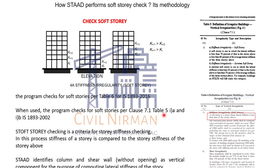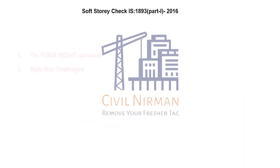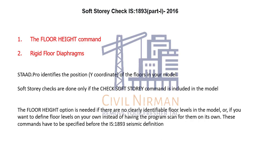Now let's understand the basic requirement when you go for a soft story check. In order to perform the soft story check there are two methods — you just require any one of them. These are the floor height command option and the rigid floor diaphragm option. STAAD.Pro identifies the position of Y coordinates of the floors in your model, and soft story checks are done only if the 'check soft story' command is included in the model.